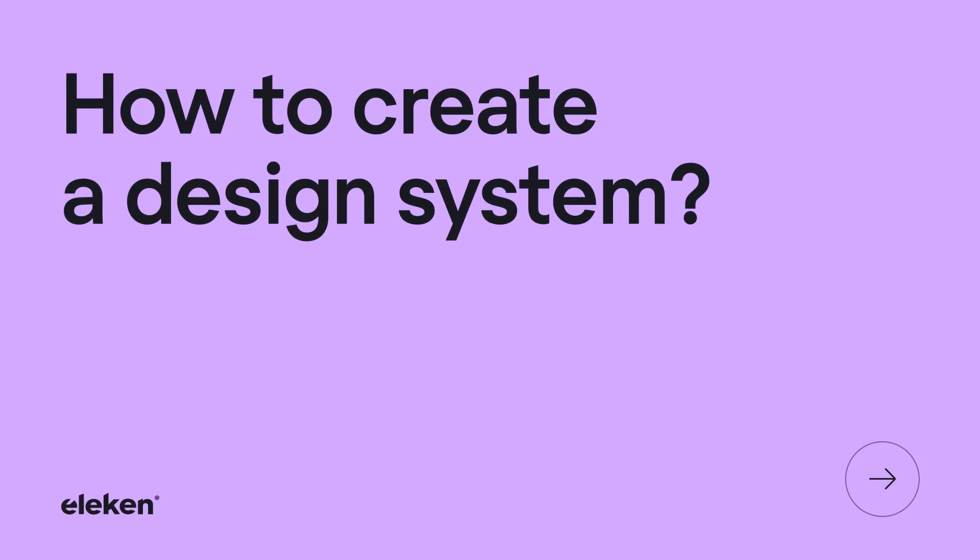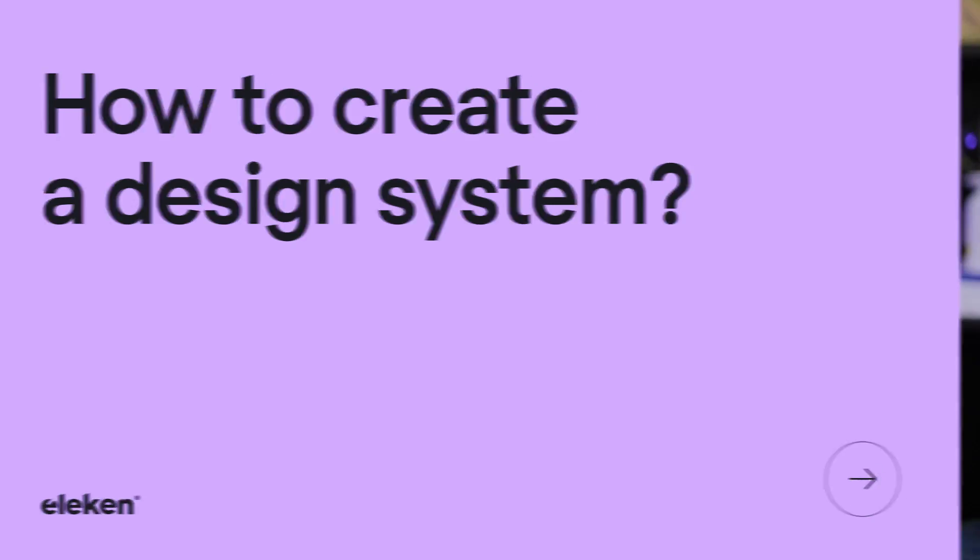How do you create a design system? Start by running a design audit, like HubSpot did. Explore and codify what you already have designed. If you find 10 different buttons being used alongside each other, choose one and document it as a standard design component. I have a video on how to run an audit — check it out, it's pretty popular.